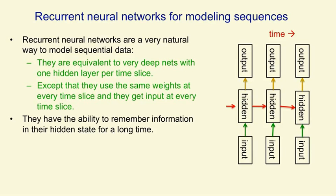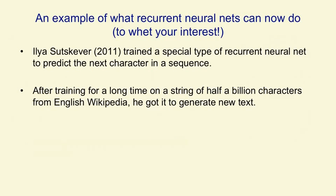Recurrent nets have the ability to remember information in their hidden state for a long time. Unfortunately, it's quite hard to train them to use that ability. However, recent algorithms have been able to do that. To show you what recurrent neural nets can now do, I'm going to show you a net designed by Ilya Sutskever. It's a special kind of recurrent neural net, slightly different from the kind in the diagram on the previous slide, and it's used to predict the next character in a sequence.